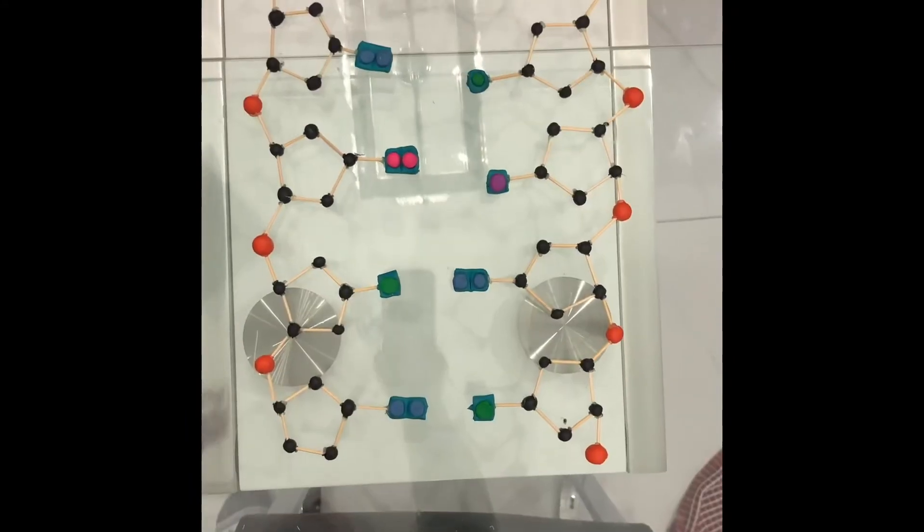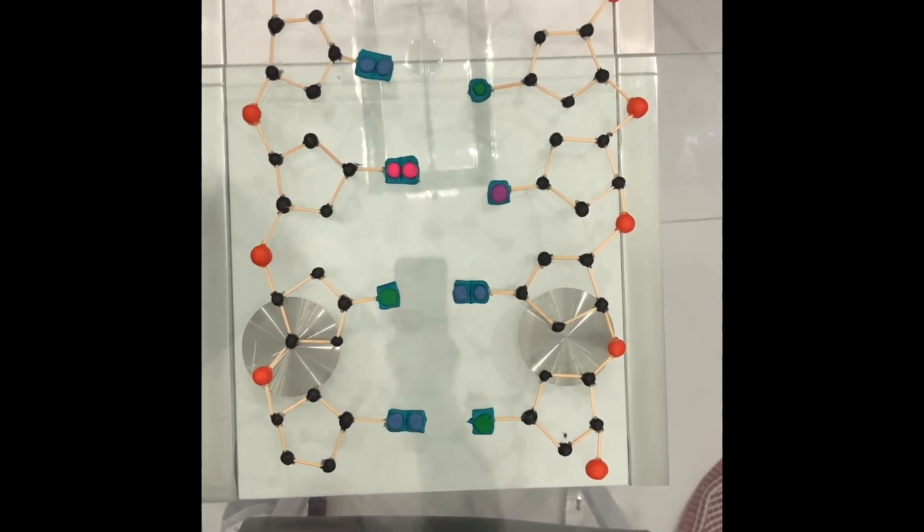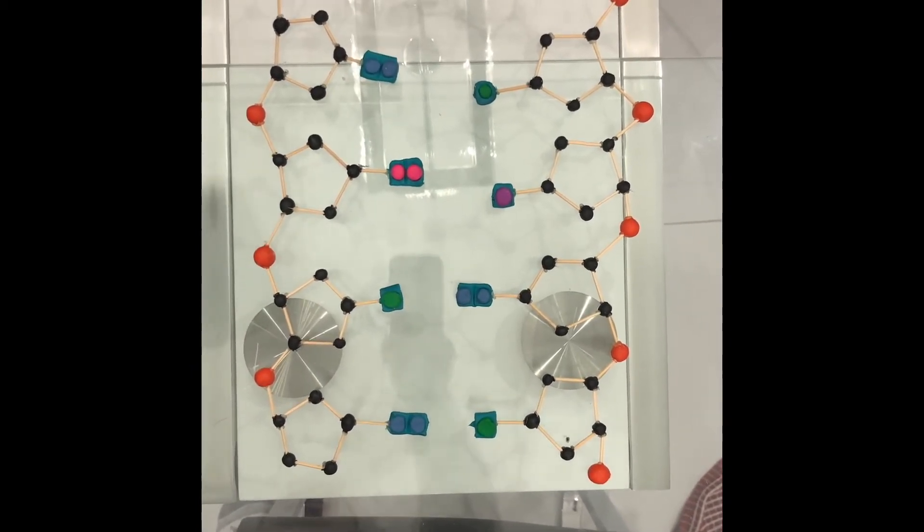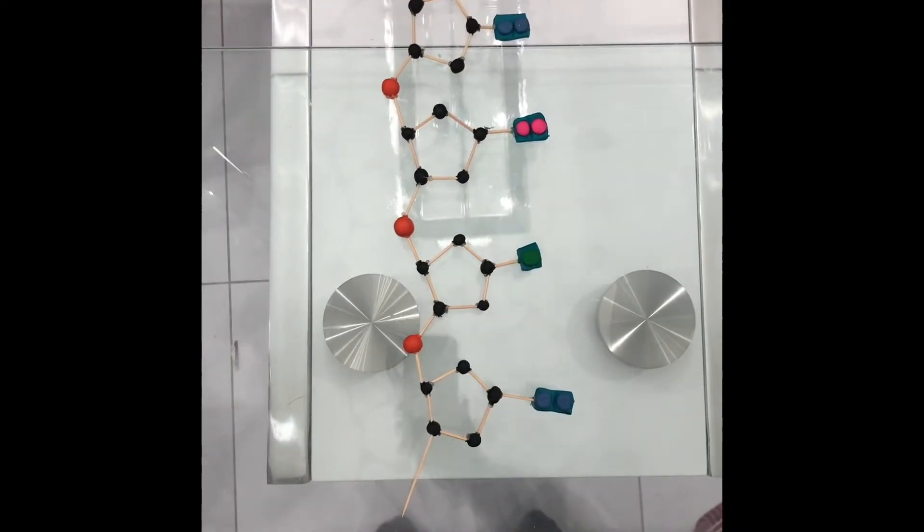At the end of each bubble, there is a replication fork. Eventually, the bubbles will enlarge and fuse together to produce two identical daughter strands, sometimes called the new and old strands. However, this process is more complicated than that. Each strand has a different replication speed.